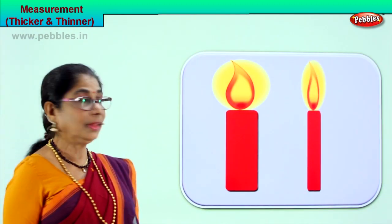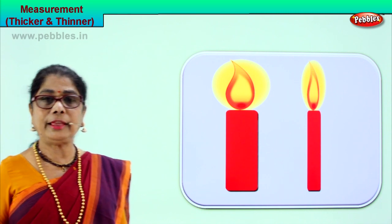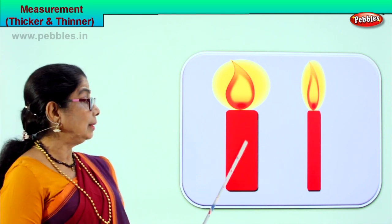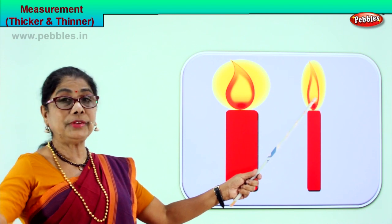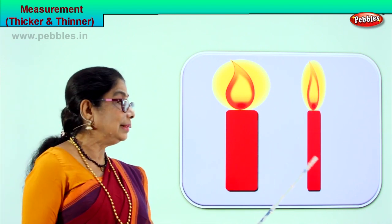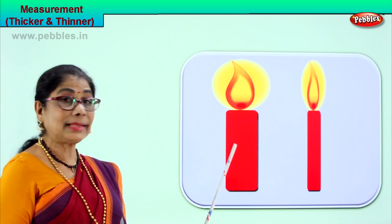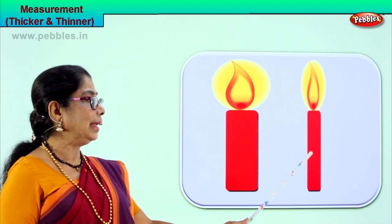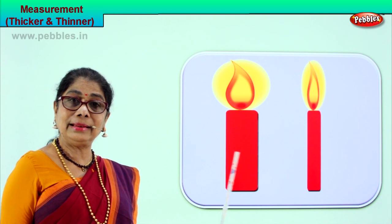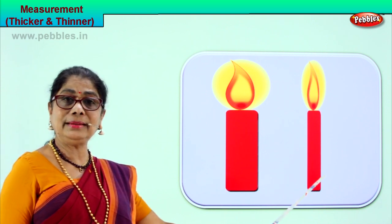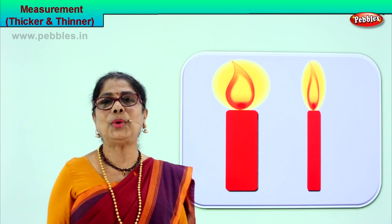See what we have? We have two candles here. Look at the candles — a thin candle and a thick candle. The thick candle gives a thick, big, huge flame, and the thin candle gives a very small, thin flame. This candle is thin, this candle is thick. We say this candle is thicker than this candle. Or, this candle is thinner than this candle. Now you understand what is thinner and what is thicker. Let's go to another picture.